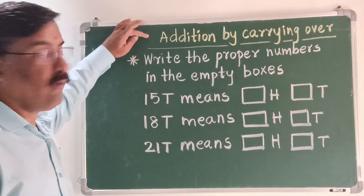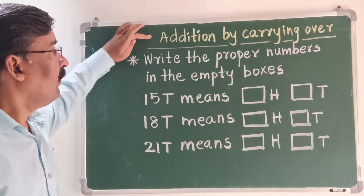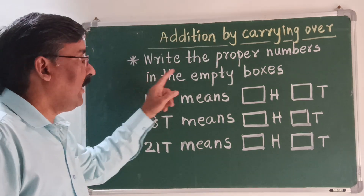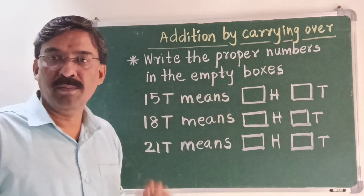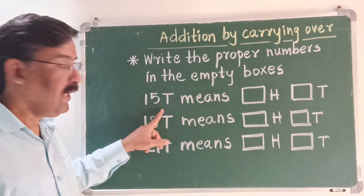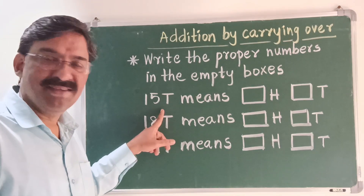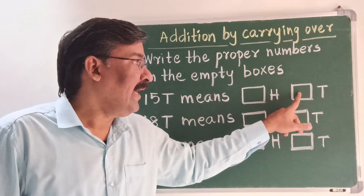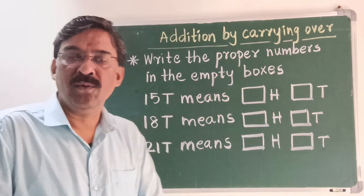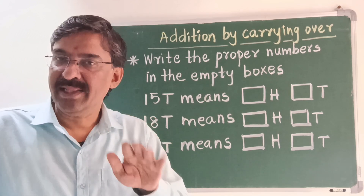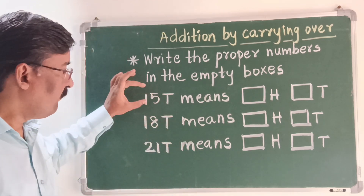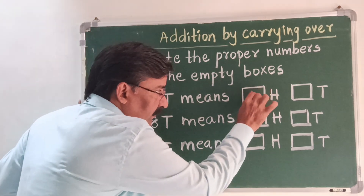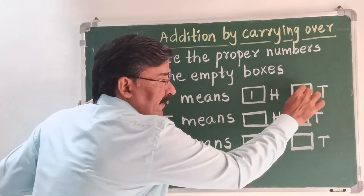Hello children, today we are going to do the topic addition by carrying over. Our first question is: write the proper numbers in the empty boxes. 15 tens — T means tens — 15 tens means dash H, H means hundreds, and a dash tens. Children, you already know that in 100 there are 10 tens. Therefore, 15 tens means 1 hundred will be there and 5 tens will be there.